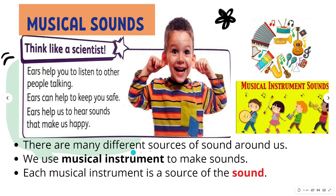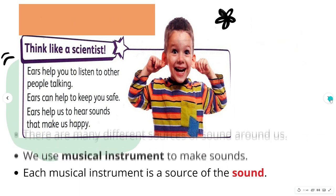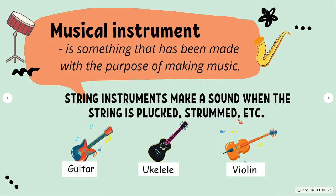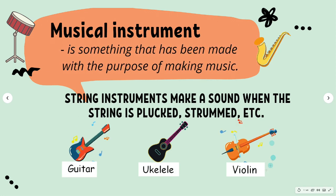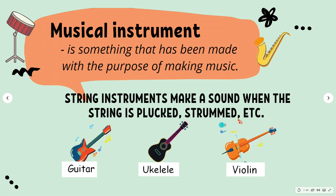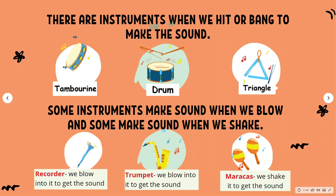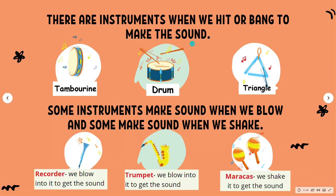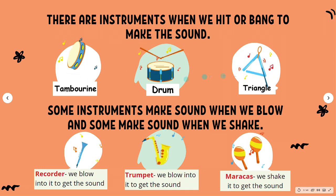There are many different sources of sound around us. We use musical instruments to make sounds, and each musical instrument is a source of sound. String instruments like guitar, ukulele, and violin make a sound when the string is plucked or strummed. There are also instruments we hit or bang to make sound — these are tambourine, drum, and triangle.